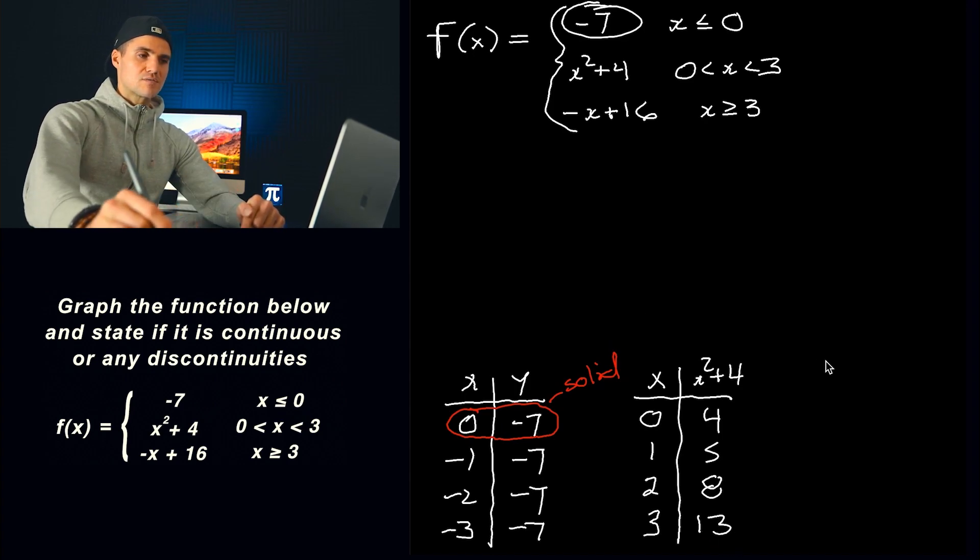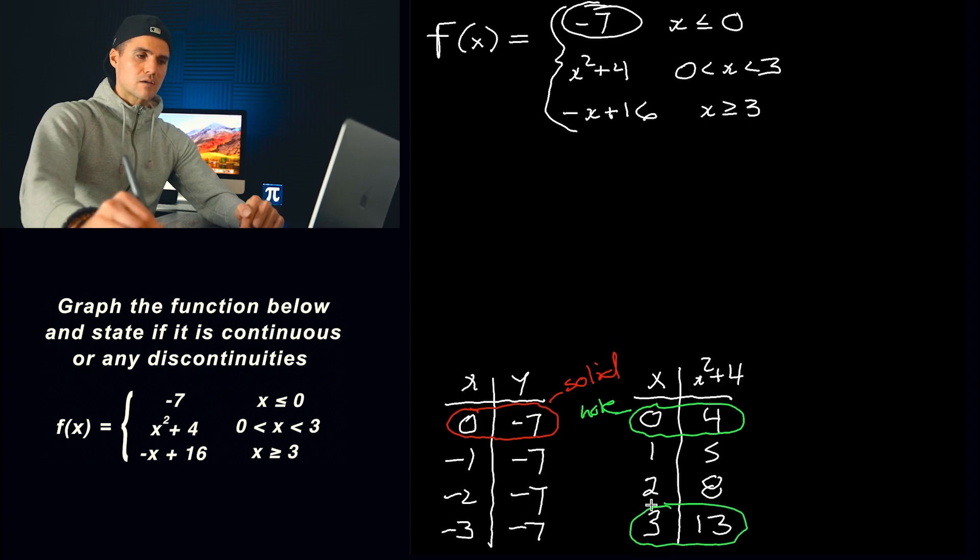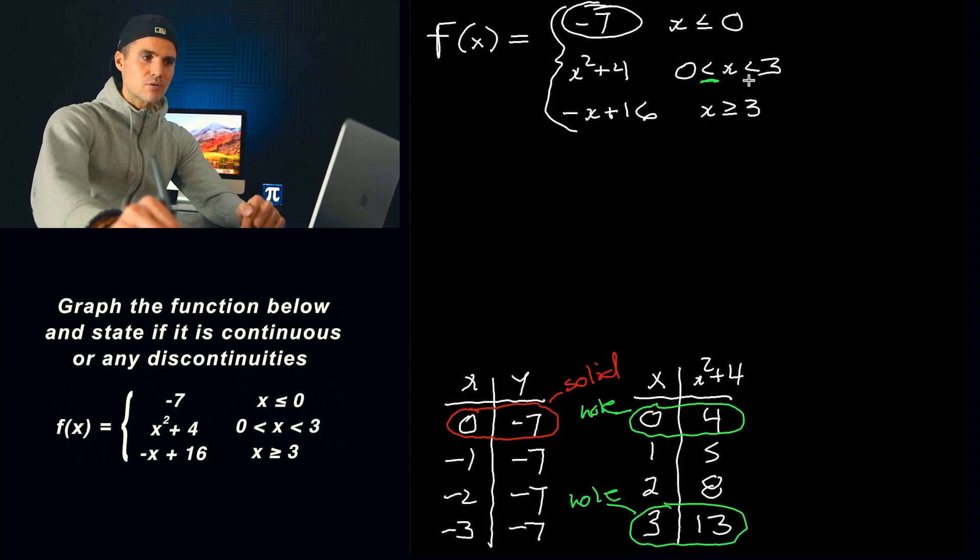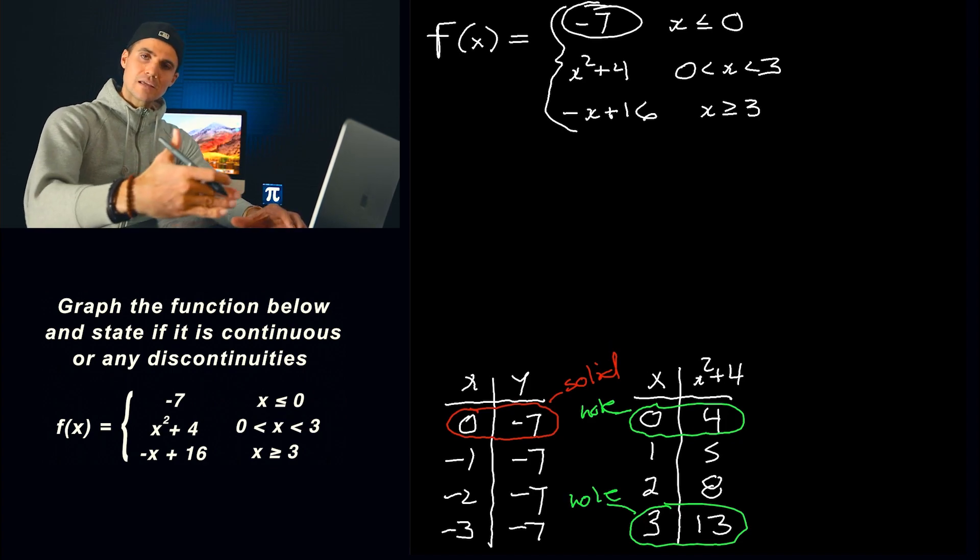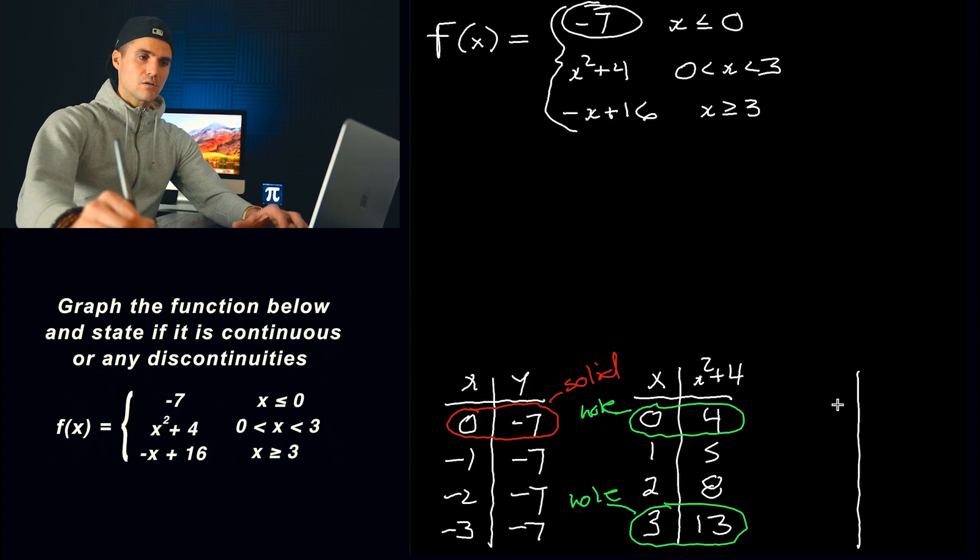And so these values right here, zero and four, that's going to be a hole on the graph. Same thing here with that three and 13. That's going to be a hole because again, it's not including that zero, it's not including that three. Now if it was greater than or equal to, less than or equal to here, both of these points would be solid. So I find it helpful as you're making these tables to just label these solids and holes as you go along because then the graphing process is just going to be smoother and it's going to go faster as well.